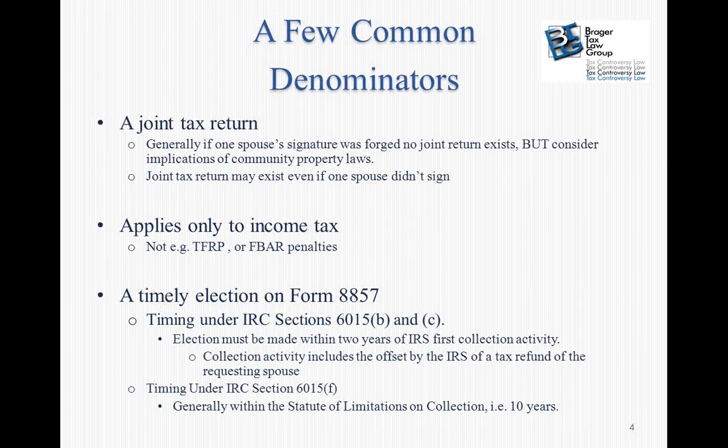Before arguing with the IRS that there is no joint return because your client didn't sign, you have to consider — because we are here in California — the implications of community property laws. If you take the position there is no joint return, two separate returns become due, and each spouse is supposed to report one half of the community property income. That may be a much worse situation than agreeing there is a joint return and then qualifying for innocent spouse relief.